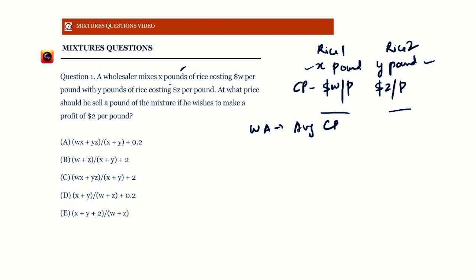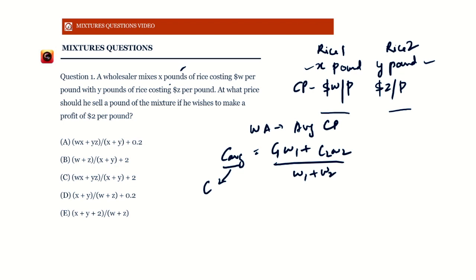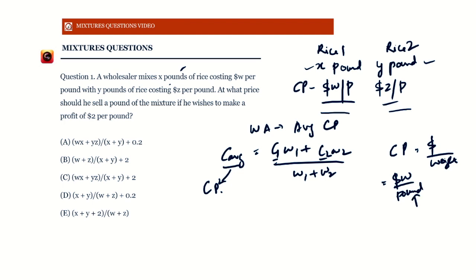We can calculate: C_average = (C1·W1 + C2·W2) / (W1 + W2). Now, since we're finding the cost price, C1 and C2 are the cost prices — dollar w and dollar z. The weights W1 and W2 are the weights of the rice in pounds, since cost price equals dollar amount divided by weight.